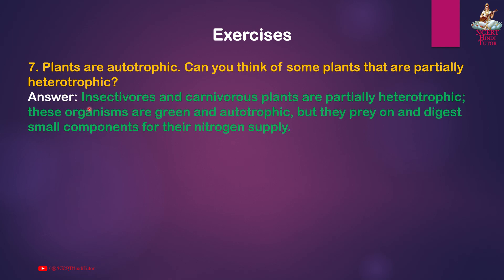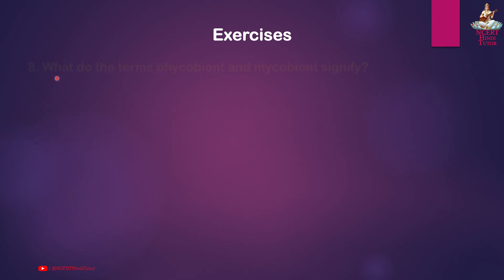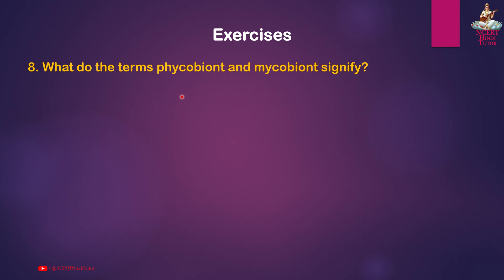Question 7: Plants are autotrophic — can you think of some plants that are partially heterotrophic? Answer: Insectivorous and carnivorous plants are partially heterotrophic. These organisms are green and autotrophic, but they prey on and digest small organisms for their nitrogen supply. Examples: Utricularia, Drosera, and Nepenthes.